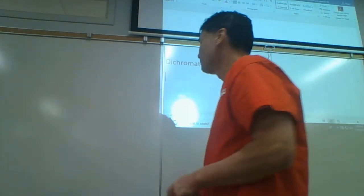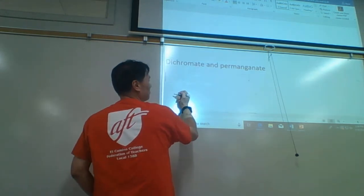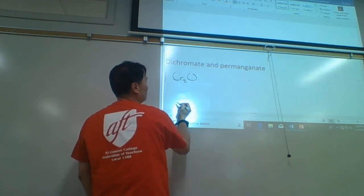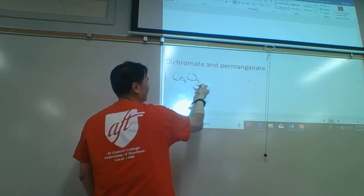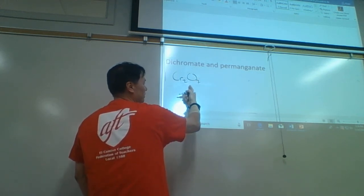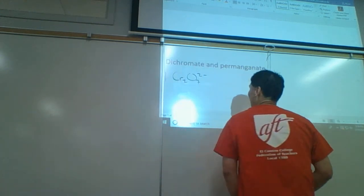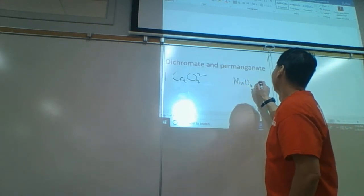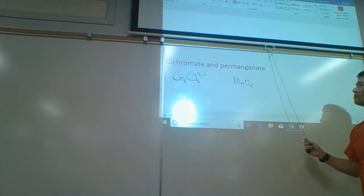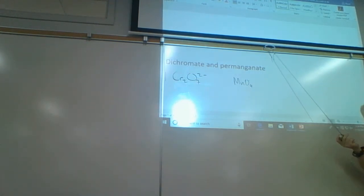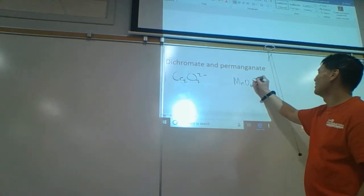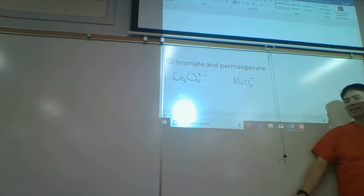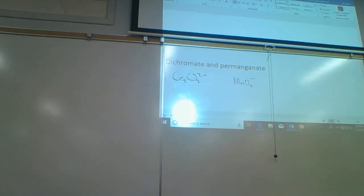Dichromate is Cr₂O₇²⁻. CR2O7, charge 2 minus — that's right. How about permanganate? MnO₄⁻ — it's negative 1, not negative 2. So dichromate and permanganate are obviously different ions. What do these two ions have in common?